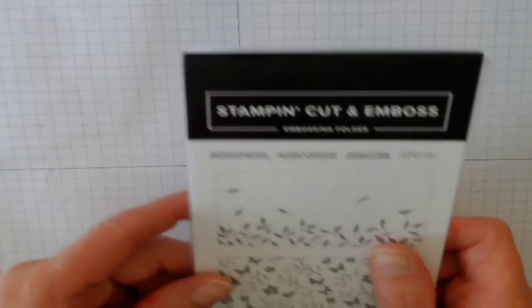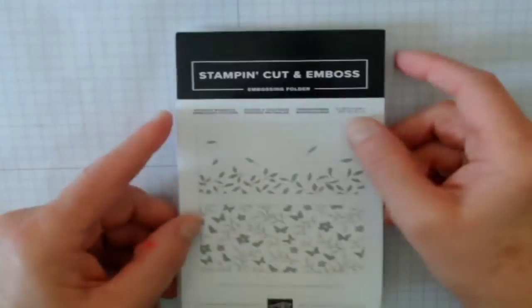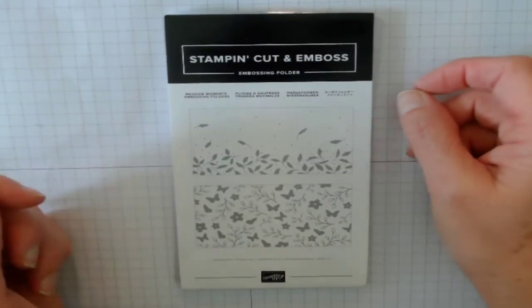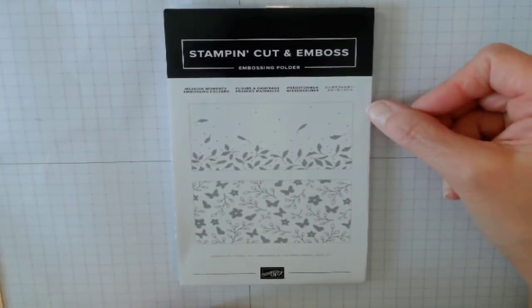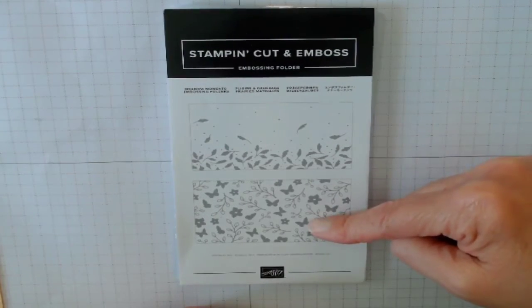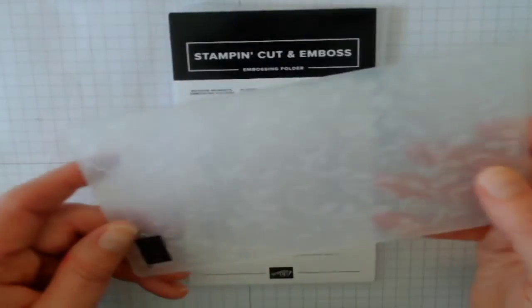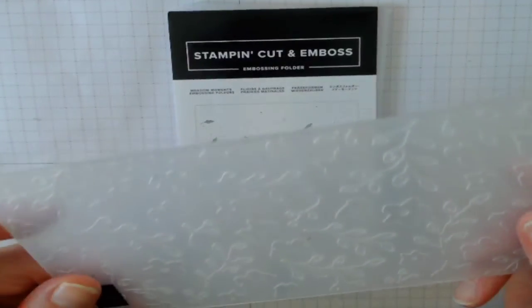The first thing that I did, I pre-cut and prepared some things ahead of time so that we don't spend the whole video making everything. I started with our stamp cut and emboss folders and this has two folders in it. I chose the bottom one.